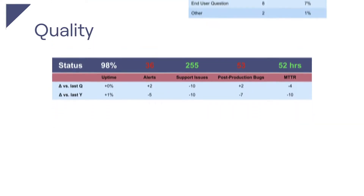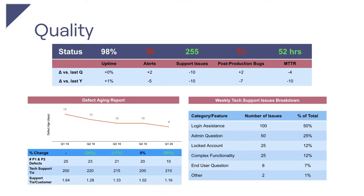Next up is quality. Externally visible quality problems always come back to the engineering team. Get ahead of any tough conversations by showing that you're dealing with issues head-on and give them an understanding of how you're addressing them. Metrics you can include: the number of customer support issues or bugs and how they're trending over time, a breakdown of support issues by type and how much work is going into each, and a demonstration of how your resolution process impacts bug resolution times.